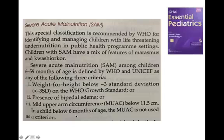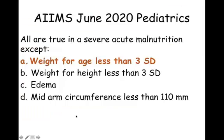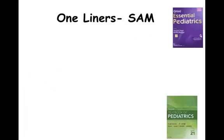So the answer to this question is that weight-for-age will not be taken as a criteria. The other three — weight-for-height, symmetrical edema, and MUAC — are all criteria for severe acute malnutrition in children.